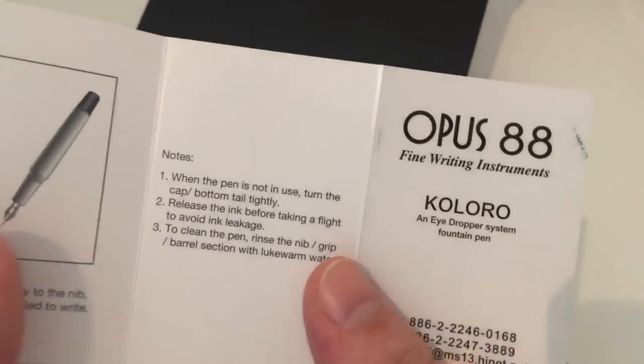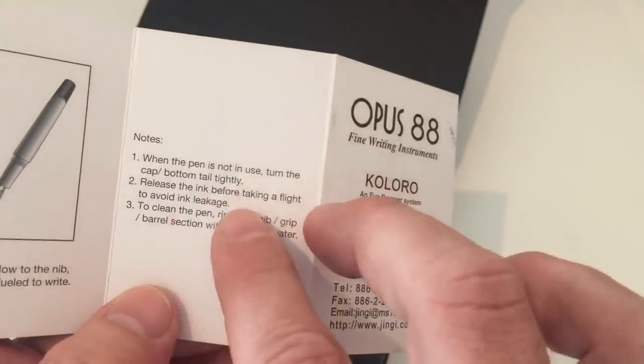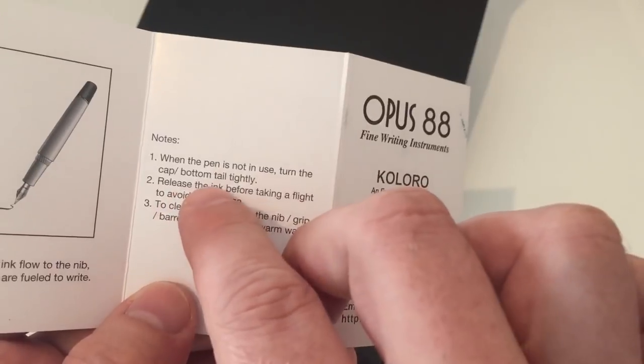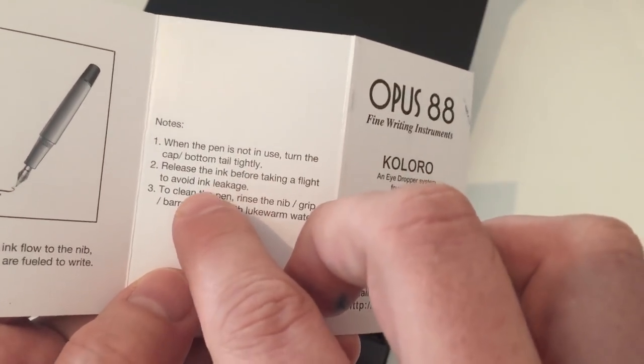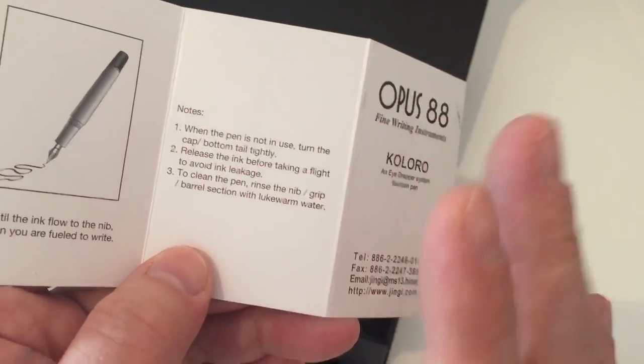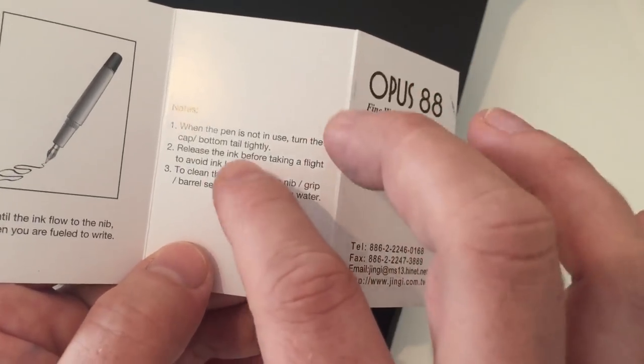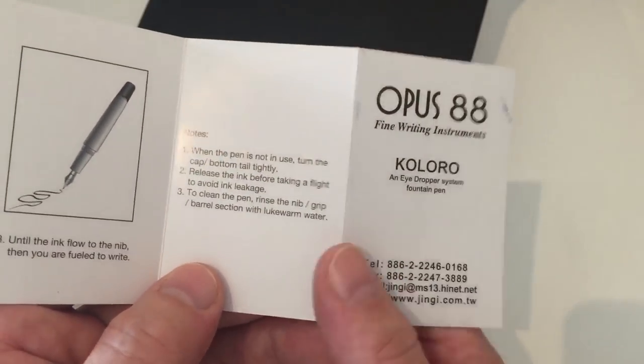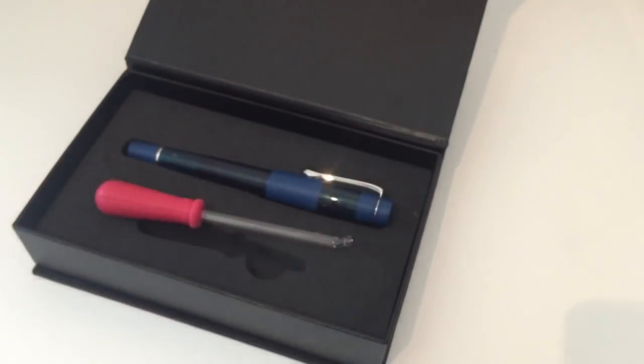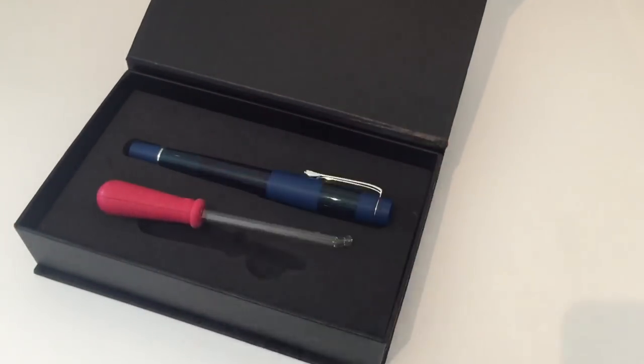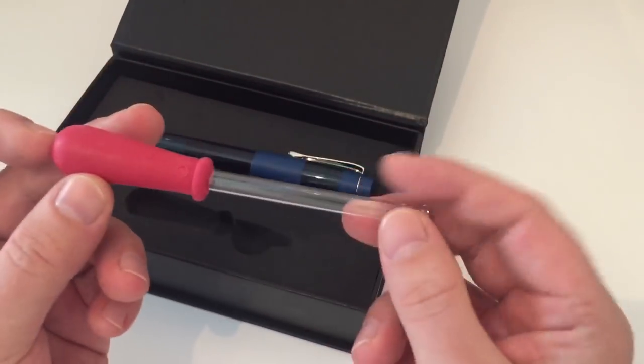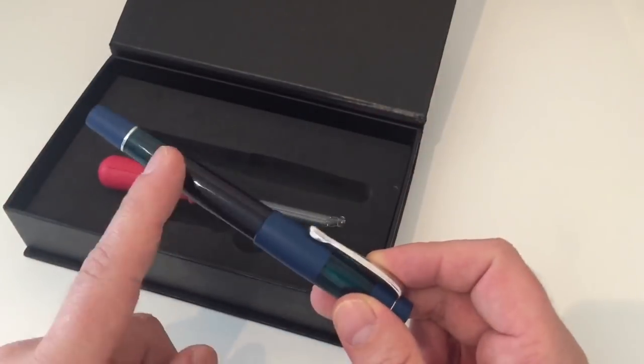It says in the instructions: when the pen is not in use, turn the cap bottom tail tightly. Then it explicitly says release the ink before taking a flight to avoid ink leakage. So I don't know if it's a Chinese-English translation issue or if they really recommend you to empty the pen before you're flying. That's just a first hint towards that sealing mechanism, but I'll get back to that in a minute.